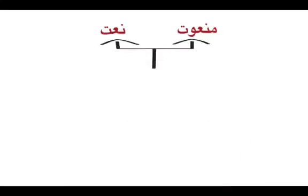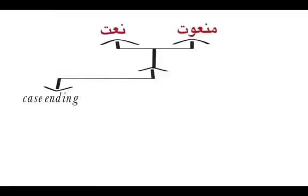Man'ud means that which is possessing the Naat. The Naat and Man'ud both have things in common. There are four things we have to look into a Naat which will tell us that the word coming after a word is Naat. The first thing we look at is the case ending. If both words have the same case ending — that is the I'rab — if it is Marfu' then Man'ud will be Marfu'.